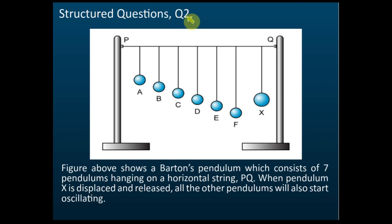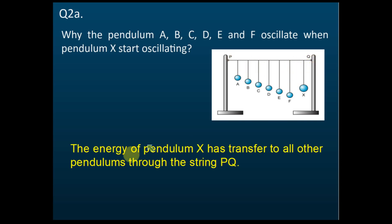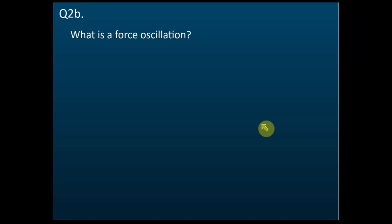Now for a structured question: a figure shows Barton's pendulum consisting of seven pendulums hanging on a horizontal string PQ. When pendulum X, the driver pendulum, is displaced and released, all the other pendulums also start oscillating. The first question asks: why do pendulums A, B, C, D, and E oscillate when pendulum X starts oscillating? That is because the energy from the driver pendulum X has been transferred to all other pendulums through the string PQ.